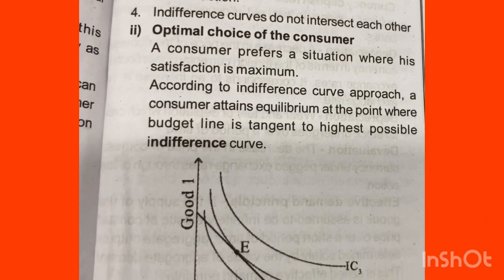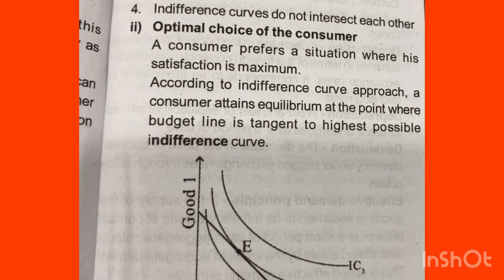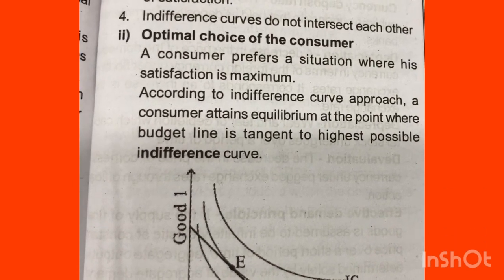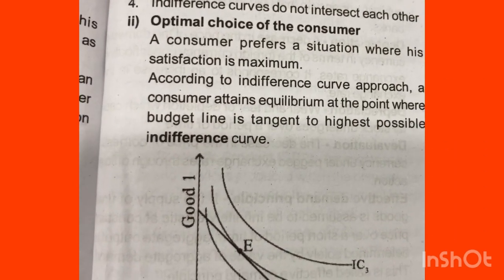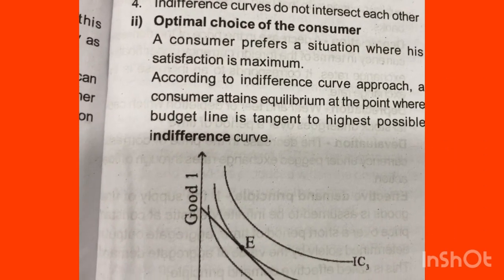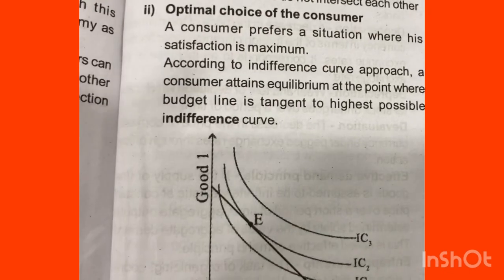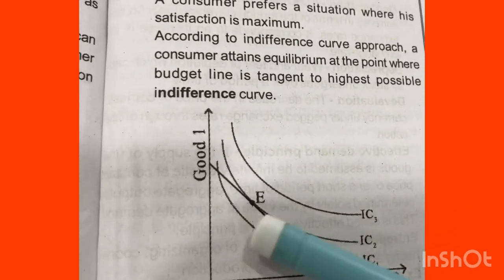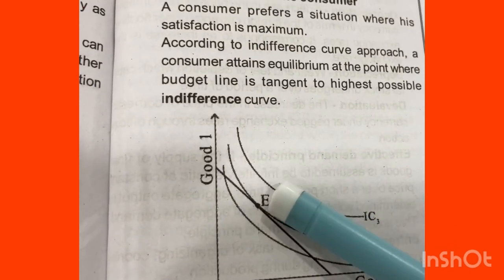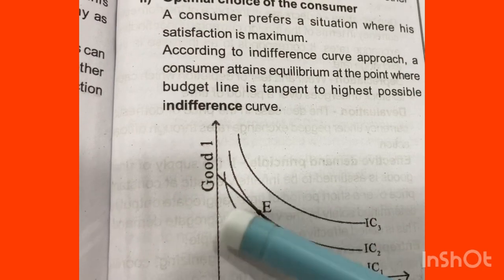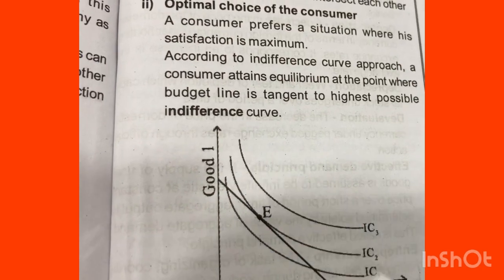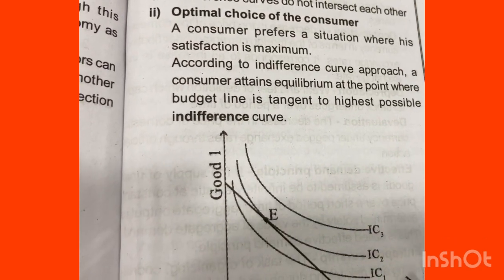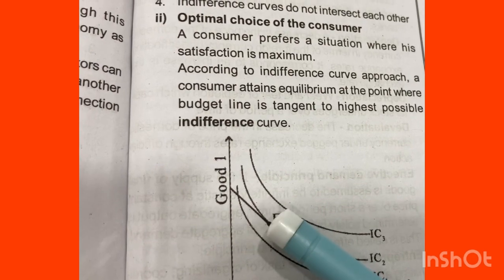According to the indifference curve approach, the consumer attains equilibrium at the point where the budget line is tangent to the highest possible indifference curve. At this point, the budget line is tangent to IC2, which is the equilibrium indifference curve.